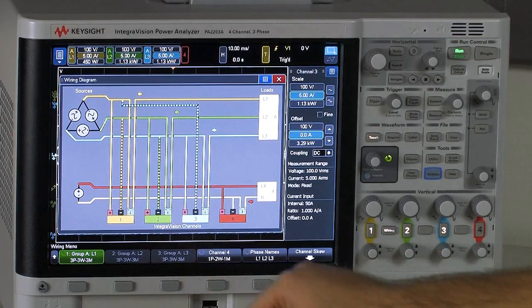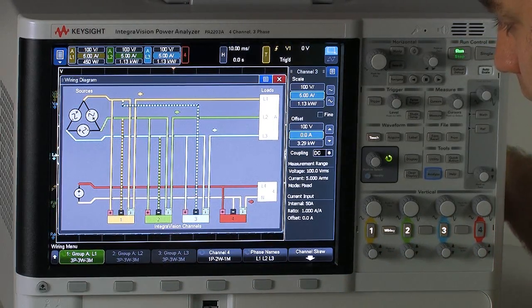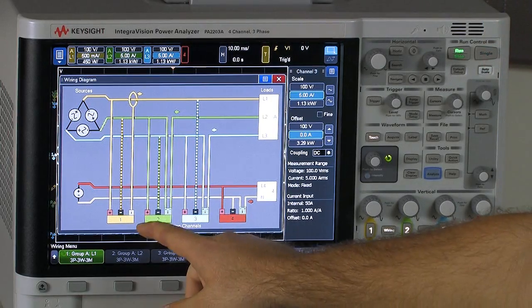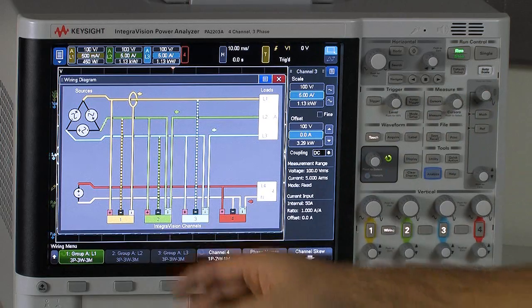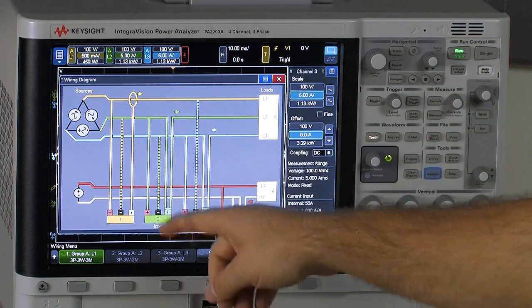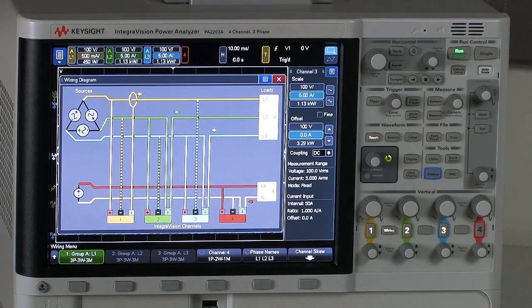And one thing we can see is if we actually change the state of the current input from the internal shunt path to the external transducer input, we can see the wiring diagram automatically updates to reflect that.